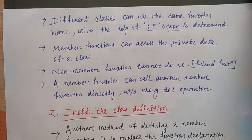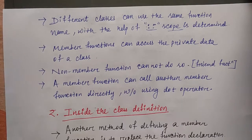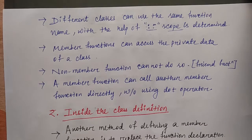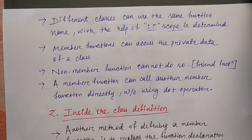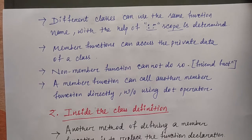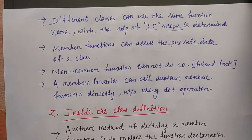Since many functions have the same name, how do we know which function belongs to which class? For that, we just write the syntax: data type, which class it belongs to, the scope resolution operator, then the function name and arguments. This way we know which function belongs to the class and its scope.